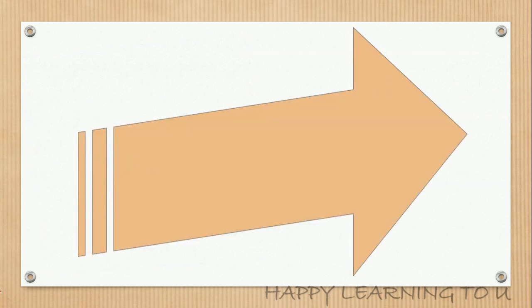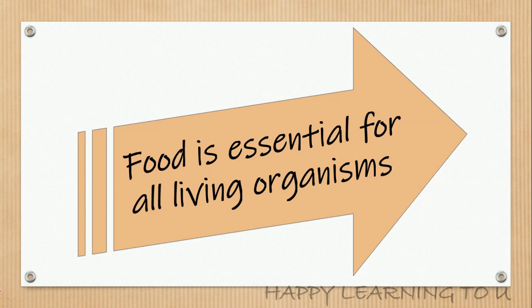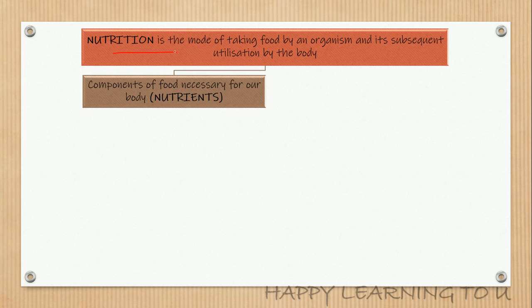Coming back to the topic: we all know that food is essential for all living organisms to carry out various activities. This process of taking food by an organism and its subsequent utilization by the body is known as nutrition. Components of food which are necessary for the body are known as nutrients.